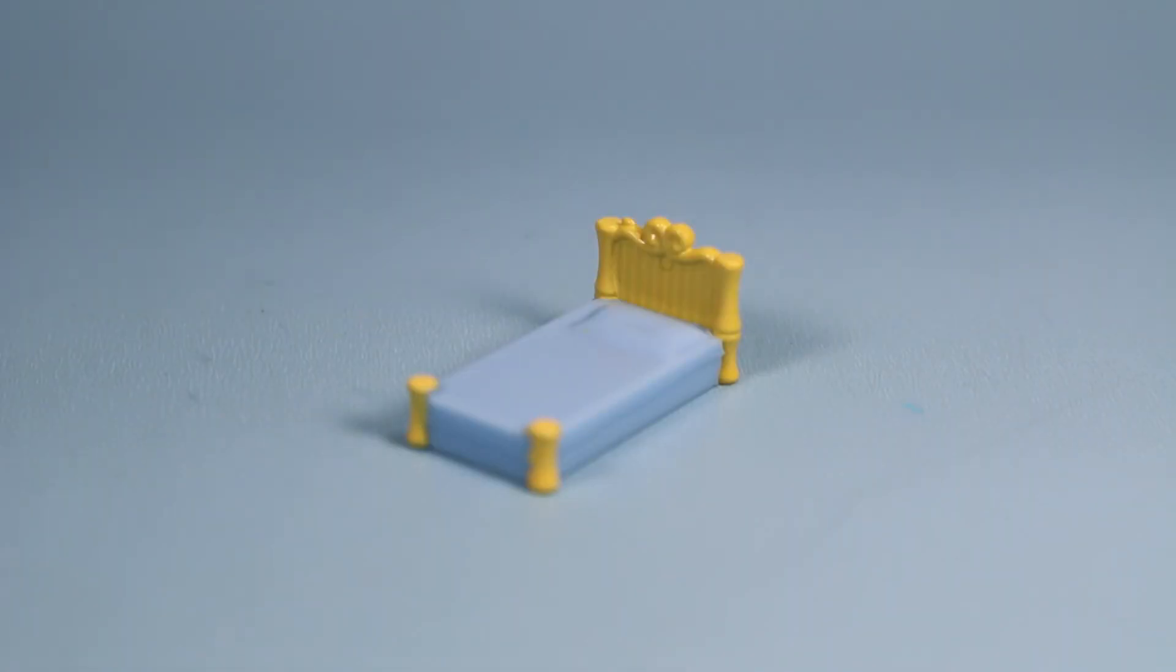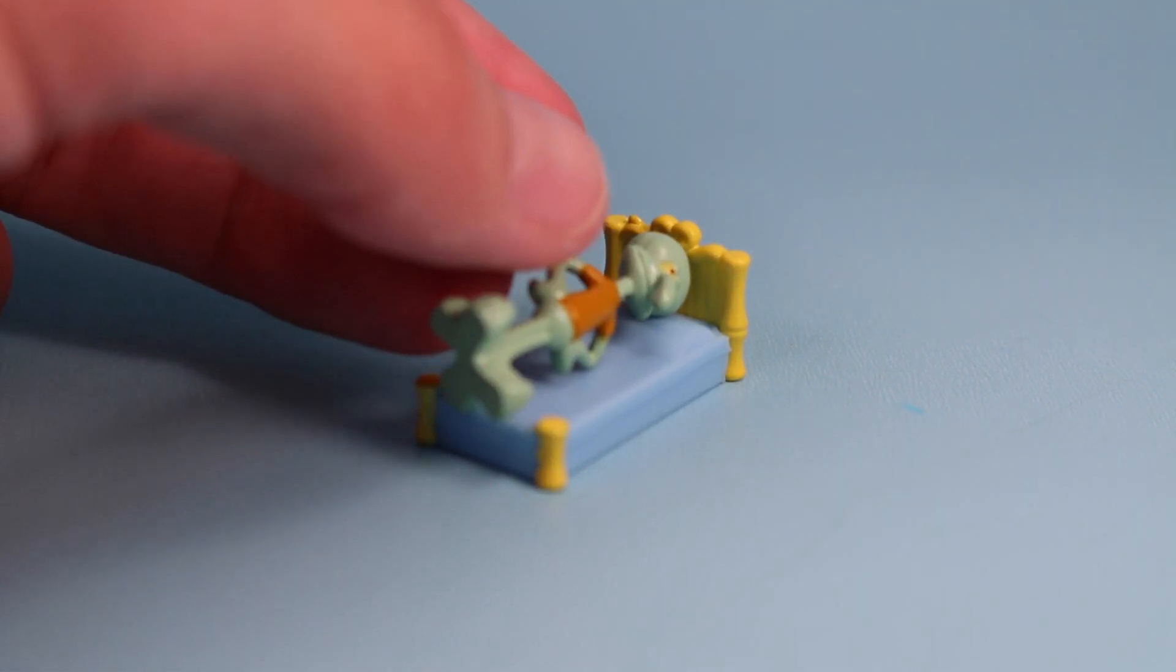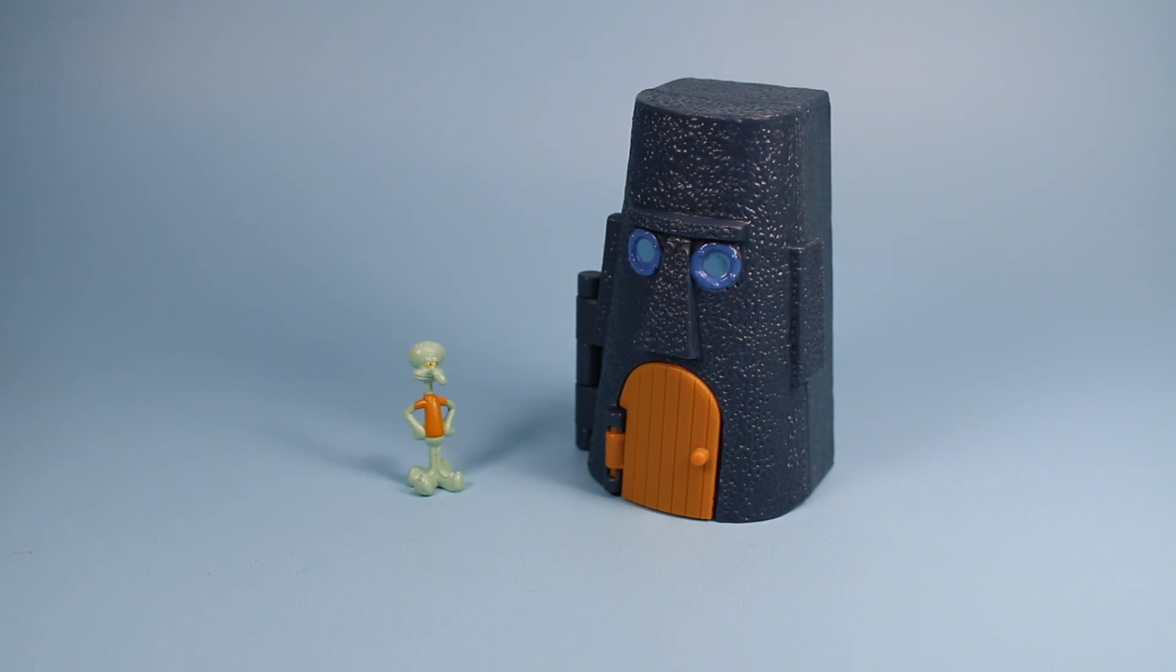This luxury resting spot is perfect for relaxing after a long day of work at the Krusty Krab, a place where Squidward is known to really run the whole business himself. And that is Squidward's house mini playset.